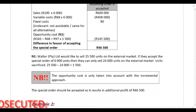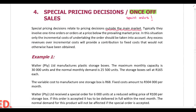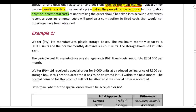These are sales outside the company's main market — normally a one-time order. Because it's a one-time order and not the company's normal sales, it's normally priced below the prevailing market price. The reason is that for a one-time order, we don't have to worry about covering fixed costs — our normal sales will cover those. For a once-off sale or special order, we only need to cover incremental costs.